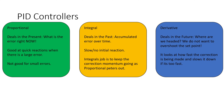Then we have the derivative, which is really just looking at how fast the correction is moving. Is it moving too fast? Its biggest contribution is to prevent an overcorrection — it gives us a soft landing.